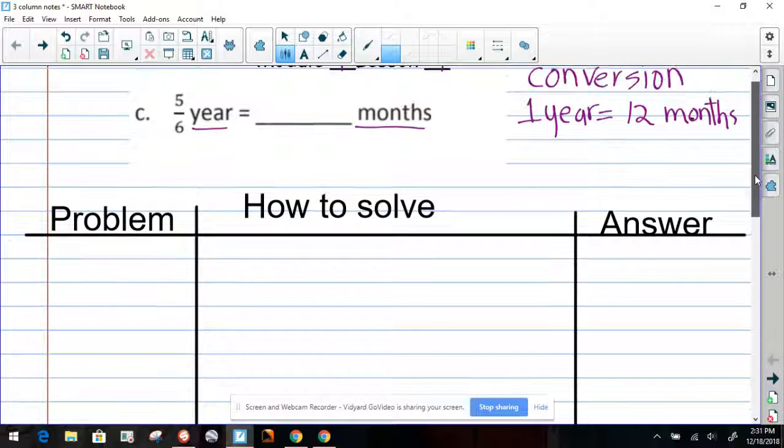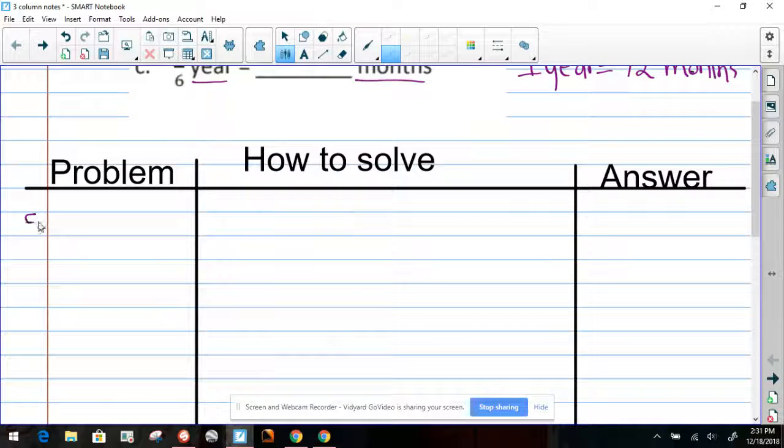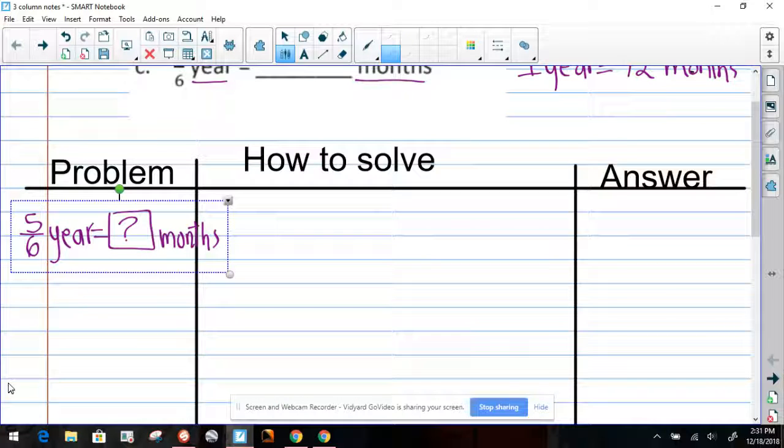So let's write this down. Five-sixths of a year. So now we know that our task is to find what is the equivalent of five-sixths of a year into months.